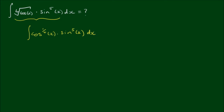If we look even a bit closer, we can see that we have more or less an even power of cosine and an odd power of sine. So an even power of cosine — even though it's not an integer power — we can still consider it as an even power and use a strategy that we're already familiar with.